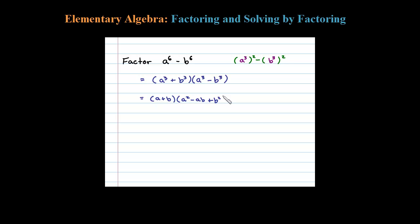Now the formula for difference of cubes is a minus b times a squared plus ab plus b squared. And that's the complete factorization.